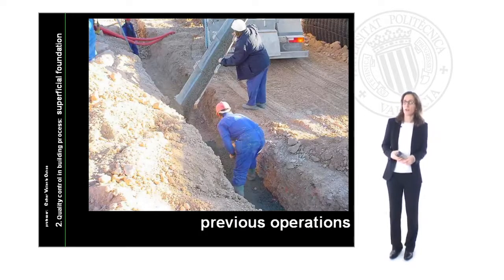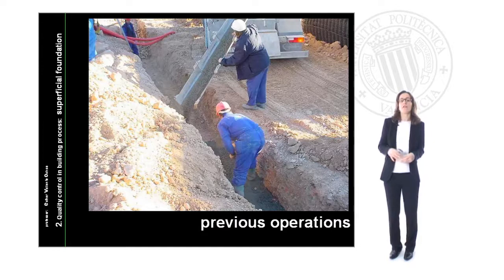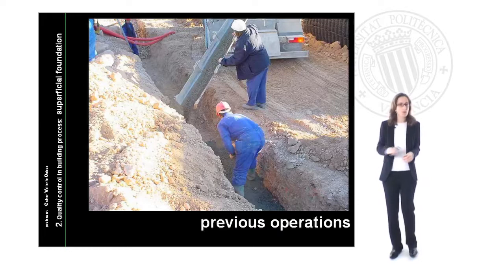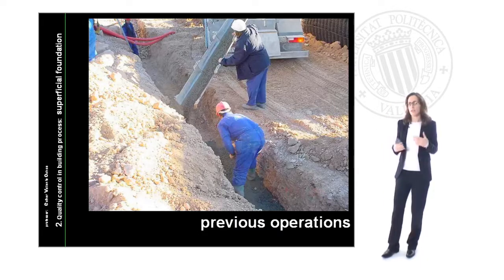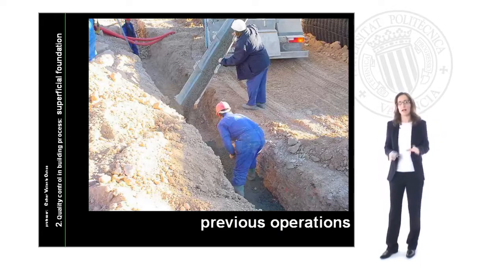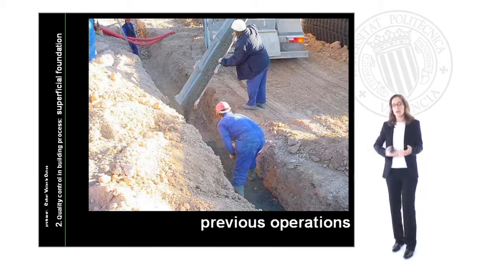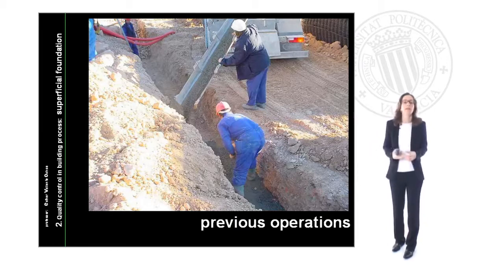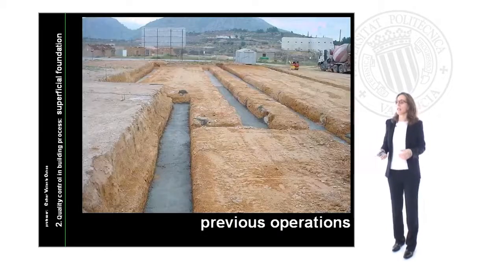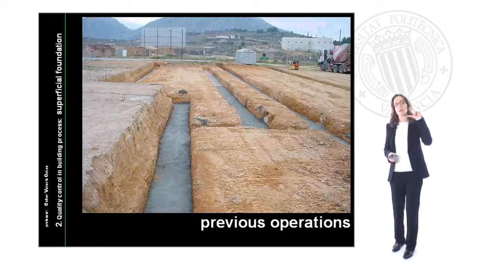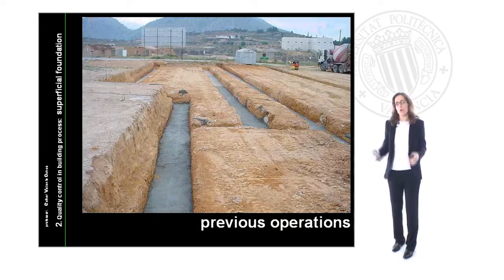Foundation begins with previous operations approximately at the foundation level. For example, we have to put on a cleaning concrete at the bottom of the surface. This is not a structural concrete, just a cleaning concrete — a poor-characteristics concrete with no resistance — that will help us to protect our steel when we begin the reinforcement. Cleaning concrete is just eight or ten centimeters in width and guarantees a horizontal surface where we will place the steel in the reinforcement.